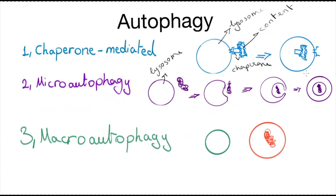These first two types are just as simple as that. So let's get to macroautophagy. Macroautophagy is basically the delivery of the content to the lysosome in a double-membrane-bound autophagic vacuole. Let's take a look at that — here we have our lysosome.